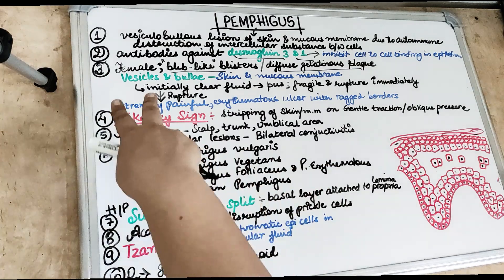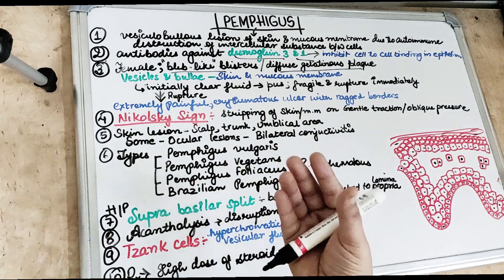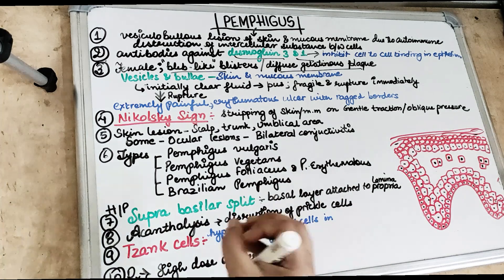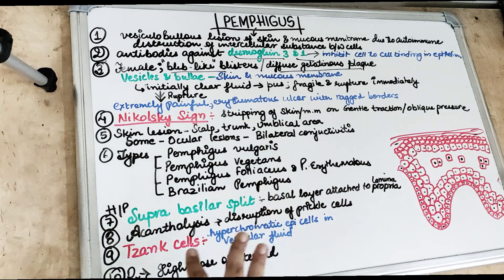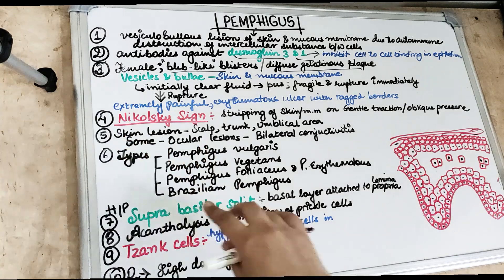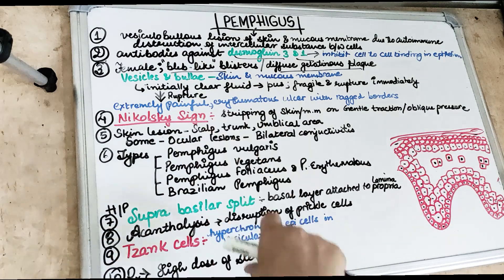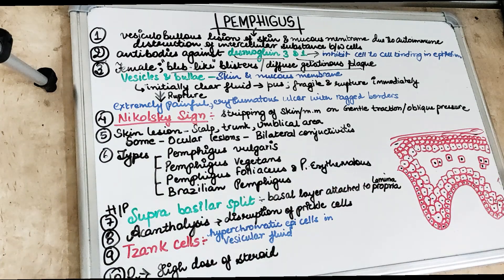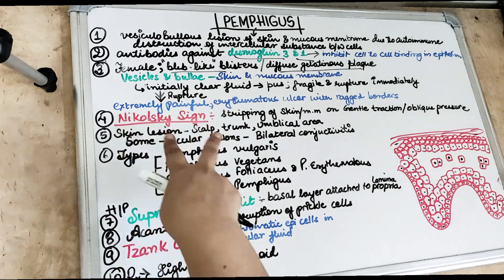As soon as these vesicles or bullae are formed, they rupture immediately because they are very fragile, leaving very painful superficial erythematous ulcers. They form red-colored ulcers with ragged borders, bleed profusely, and are sometimes covered with blood-tinged exudate. In pemphigus vulgaris, on gentle traction or oblique pressure on the skin, there is stripping of the skin or mucous membrane.